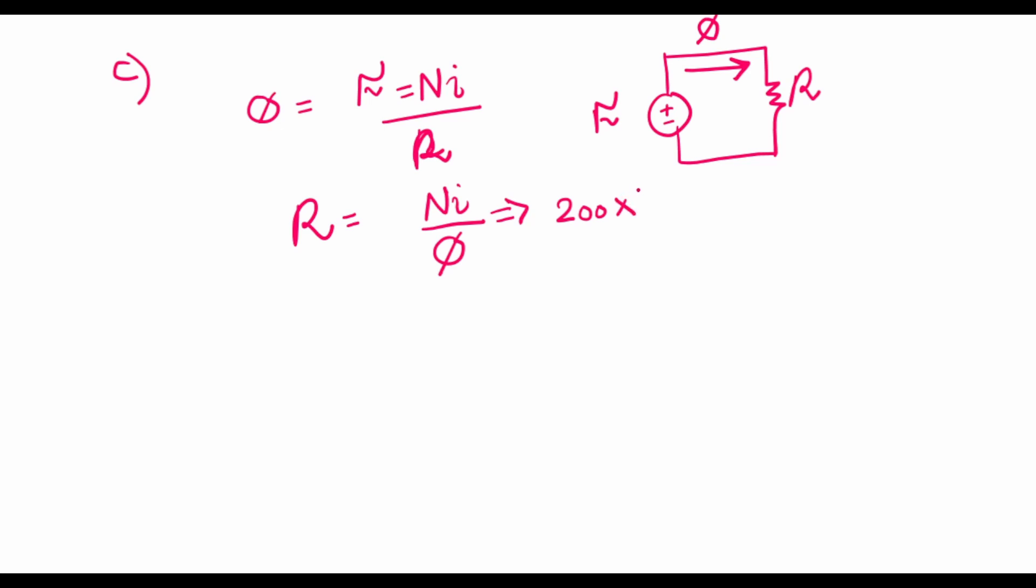We found out the current as 550 amperes divided by the flux, which is 0.012 Webers. So when I do the algebra, I get the reluctance as 9166 times 10 to the power 3 ampere turns per Weber.